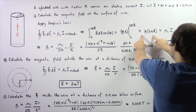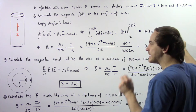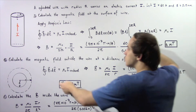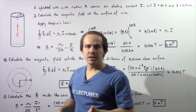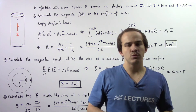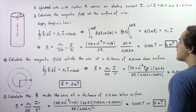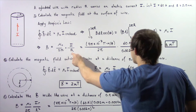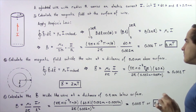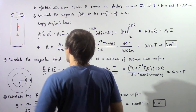Rearranging the equation gives us the magnitude of our magnetic field outside the conducting wire, assuming it to be a straight wire. So mu naught, the permeability of free space, is 4π × 10⁻⁷ T·m/A, divided by 2π, multiplied by 60 amps, divided by a radius of 0.002 meters. That gives us 0.006 teslas, or equivalently 6 milliteslas, as our magnetic field at the surface of our wire.